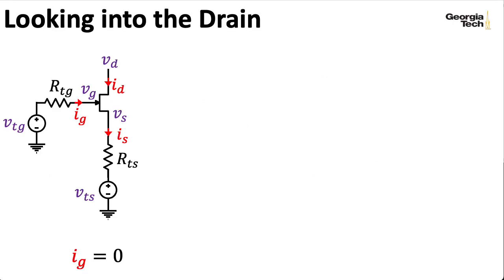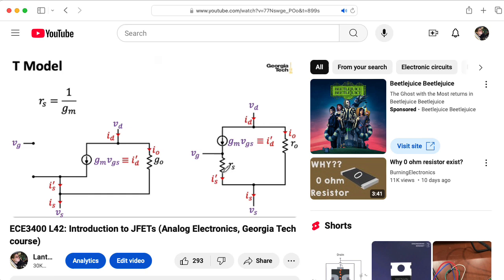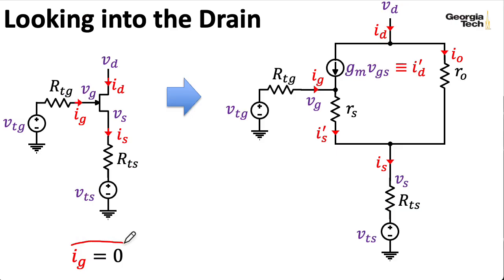In the lectures where I computed the BJT equivalent circuits, I used the pi model. Here, I'm going to use the T model. You could use either kind of model for either transistor. You'll get to the same conclusions, you just go down slightly different paths. If you haven't already done so, you should check out my introductory lecture on JFETs, where I derived these models. Again, remember IG is zero, so there's no current flowing through the gate.